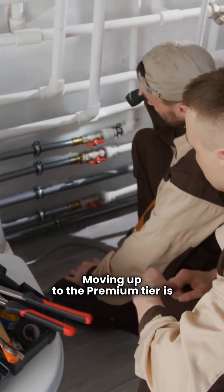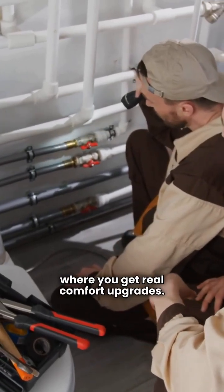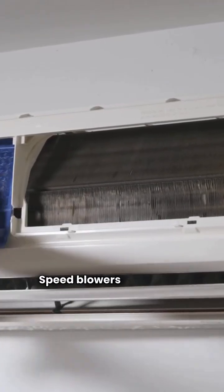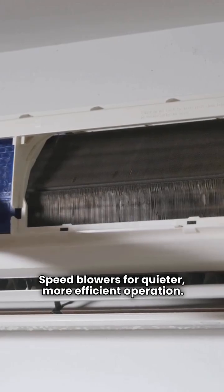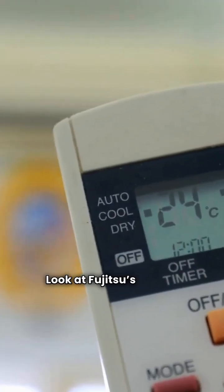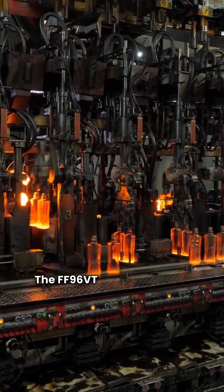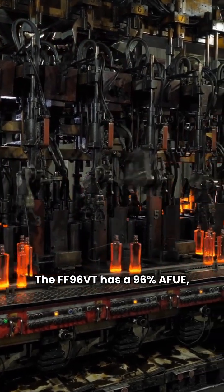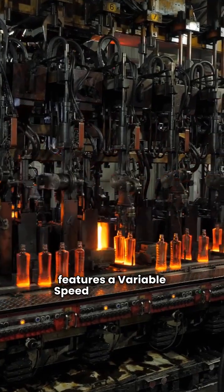Moving up to the premium tier is where you get real comfort upgrades. Both brands offer two-stage heating and variable speed blowers for quieter, more efficient operation. Look at Fujitsu's FF96VT and Trane's S9V2 or S9X2. The FF96VT has a 96% AFUE and features a variable speed blower motor.